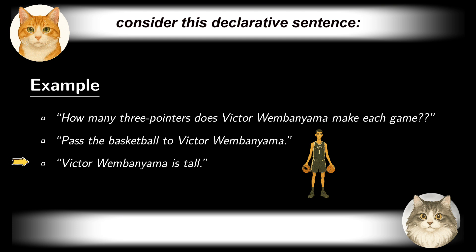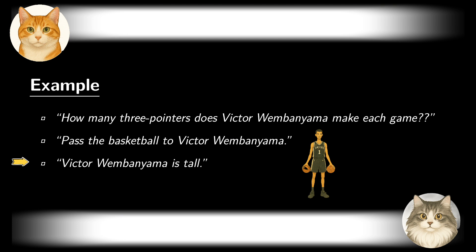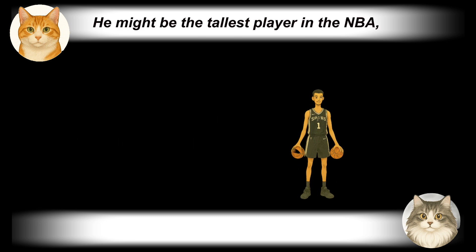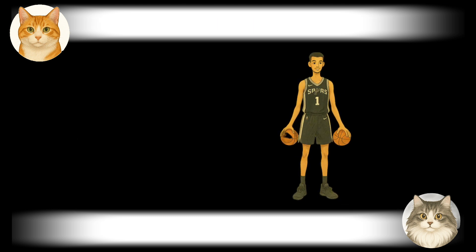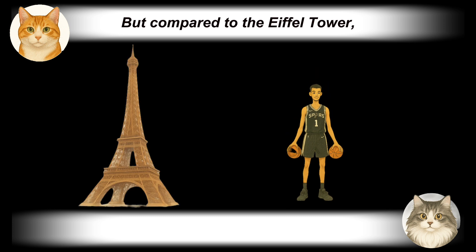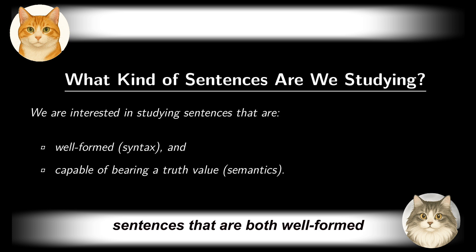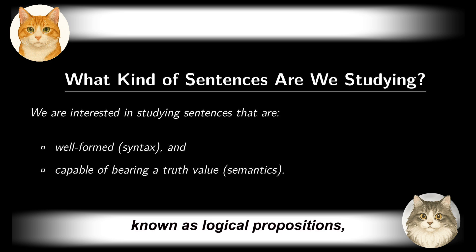On the other hand, consider this declarative sentence: 'Wembanyama is tall.' Still, we cannot definitively say whether the sentence is true or false, because the adjective 'tall' lacks a precise standard in this context. He might be the tallest player in the NBA, but compared to the Eiffel Tower, he is not tall. It is now clear that we are interested in studying sentences that are both well-formed and capable of bearing a truth value. Such sentences, known as logical propositions, will be the focus of our next session.